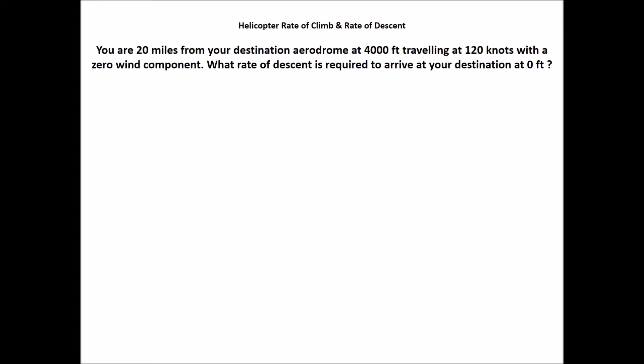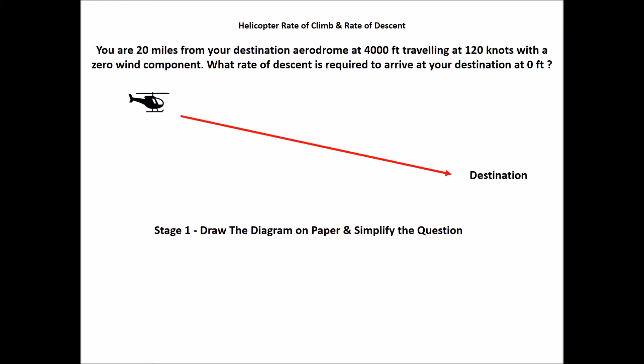Let's take a look at a few questions. Question one: you're 20 miles from your destination aerodrome at 4000 feet, travelling at 120 knots with a zero wind component. What rate of descent is required to arrive at your destination at zero feet? Draw the diagram on paper and simplify the question. Step one, calculate the elevation: starting height minus destination height — 4000 feet minus zero feet gives us 4000 feet total descent.